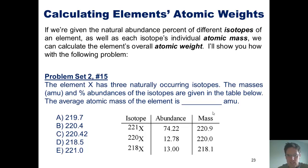The element X has three naturally occurring isotopes. The masses in amu and percent abundances of these isotopes are given in the table shown here. The average atomic mass of the element is blank amu.